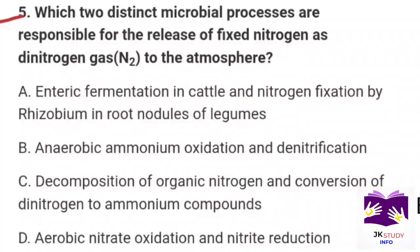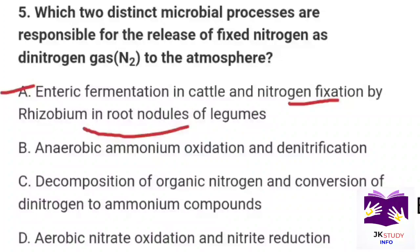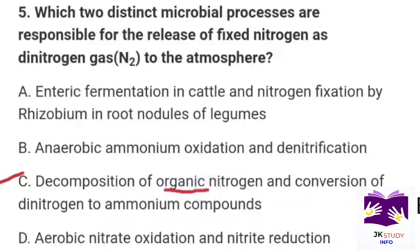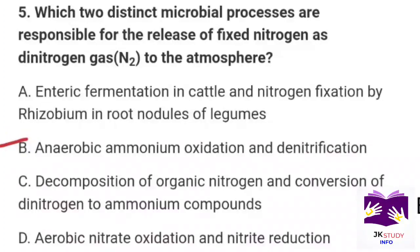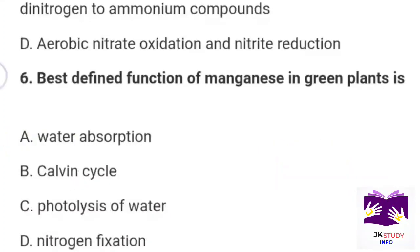Next question: Which two distinct microbial processes are responsible for release of fixed nitrogen as dinitrogen gas to the atmosphere? Option A: enteric fermentation in cattle and nitrogen fixation by Rhizobium. Option B: anaerobic ammonium oxidation and denitrification. Option C: decomposition of organic nitrogen and conversion of dinitrogen to ammonium compounds. Option D: aerobic nitrate oxidation and nitrate reduction. Correct option is Part B: anaerobic ammonium oxidation and denitrification.